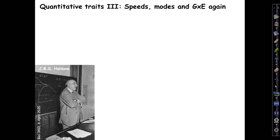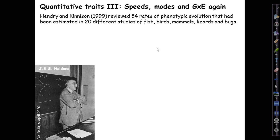In this third and last lecture about quantitative traits, we'll consider the speeds at which quantitative traits evolved, which vary a lot, some modes of selection on them other than the directional selection we've been considering so far, and we'll revisit genotype by environment interaction one last time.